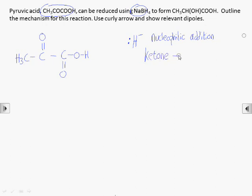We should also know that sodium borohydride can reduce ketones and aldehydes to alcohols, but it's not a strong enough reducing agent to react with carboxylic acids, so it's only the ketone functional group here that's going to be involved in the reaction.